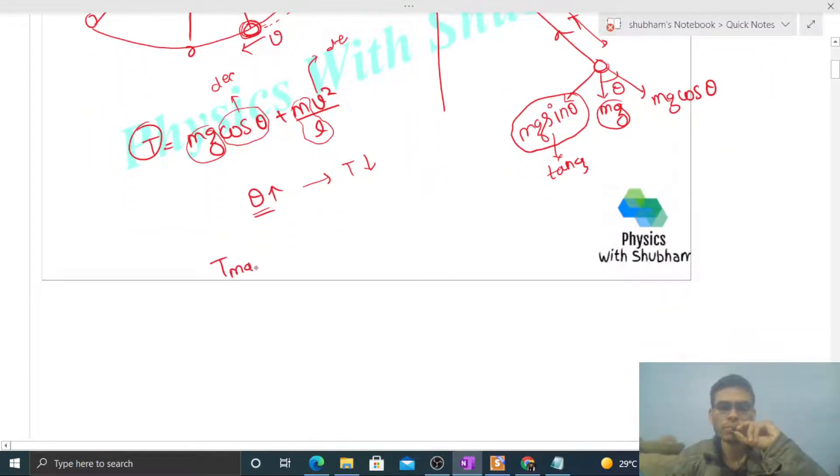So tension will be maximum for minimum value of theta, and minimum value of theta is zero, that is at the mean position. So the maximum value of tension will be for theta equals zero.